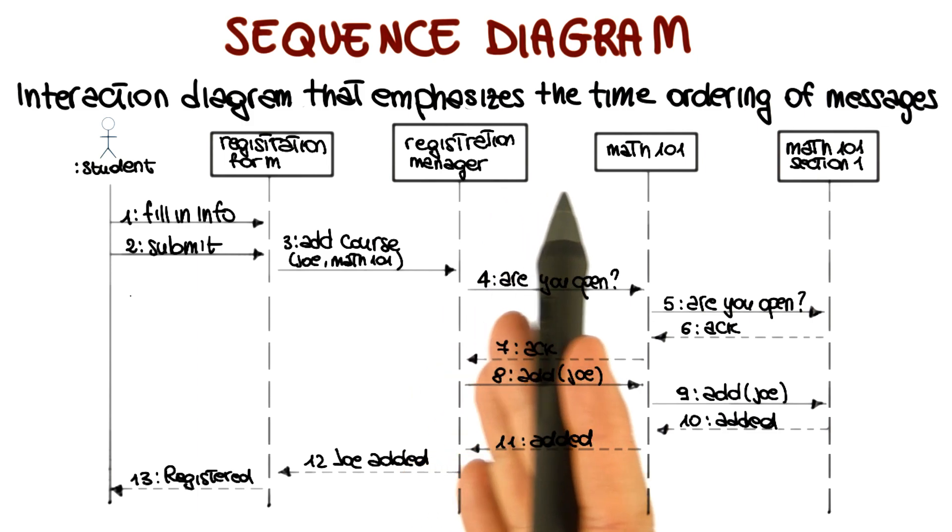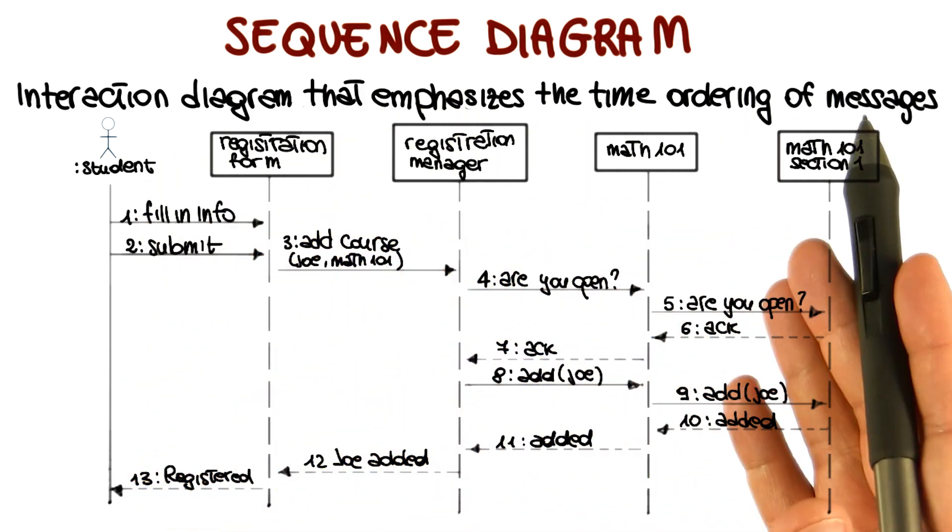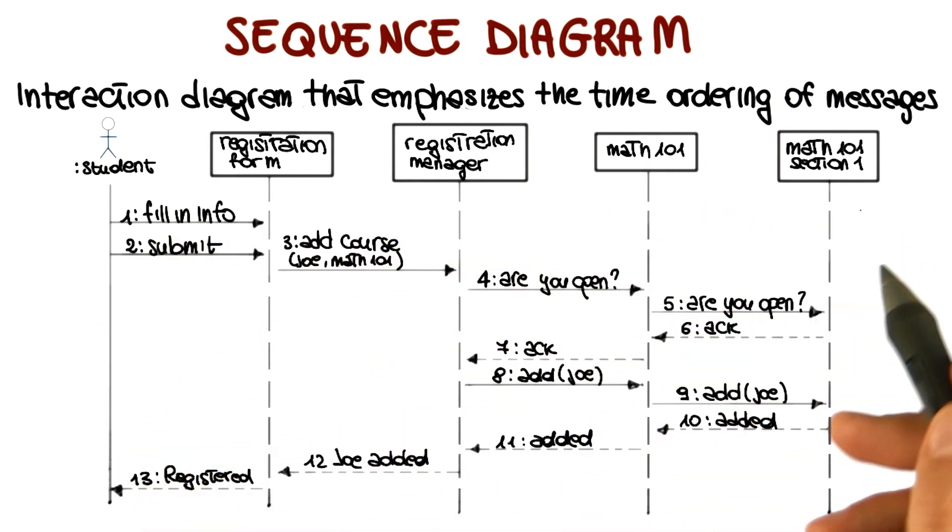As you can see, it is very easy to see how the interaction occurs between these different objects at runtime, dynamically. So what the behavior of the system is for this specific scenario.